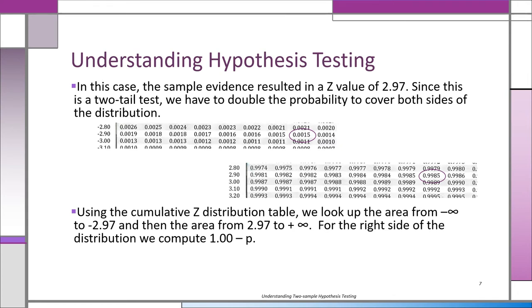We want to know, what is the likelihood of finding this difference if nothing is going on? Again, the straw man: there is no difference. We're looking at our sample evidence or something even more extreme. We have to double it because it's a two-tailed test.